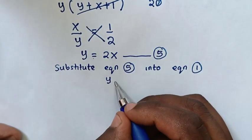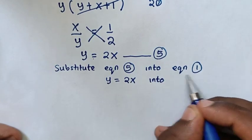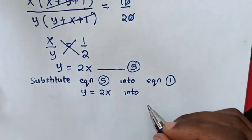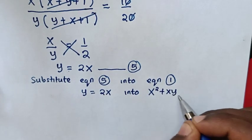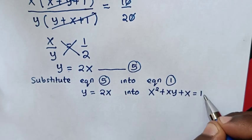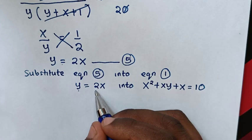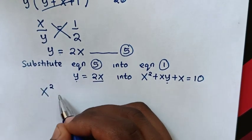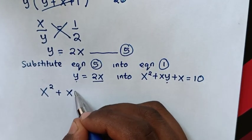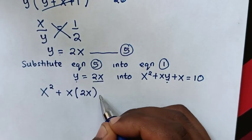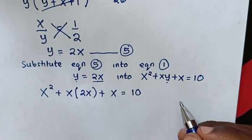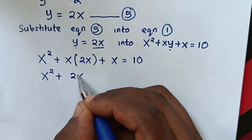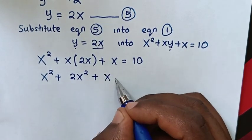We substitute equation 5 into equation 1. From equation 5, y is equal to 2x, into equation 1 which is x squared plus xy plus x is equal to 10. Therefore we substitute the value of y, which is 2x, into y. So our equation will be x squared plus x times 2x plus x is equal to 10. Then our equation will be x squared plus 2x squared plus x is equal to 10.